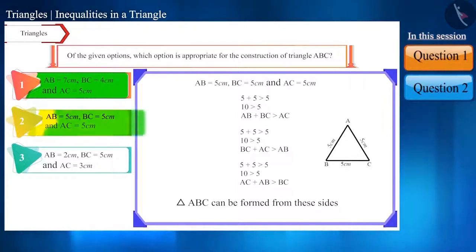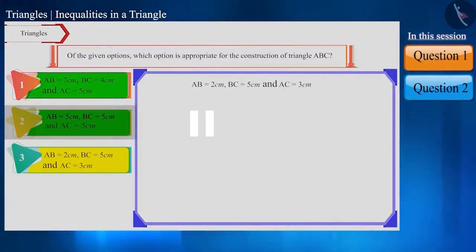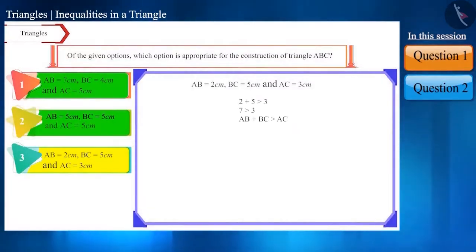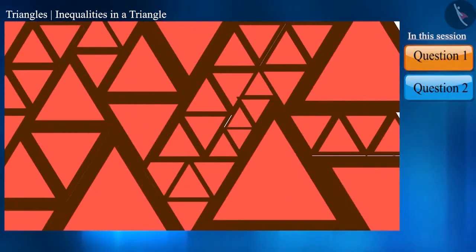Now, let's move to the last option. Here also, we will repeat the same process. You can pause the video and try to solve it yourself. Here, the sum of side AC and side AB is equal to side BC. Therefore, triangle ABC cannot be formed from these sides. So according to the question, this option is incorrect. Now, let's take the next question.